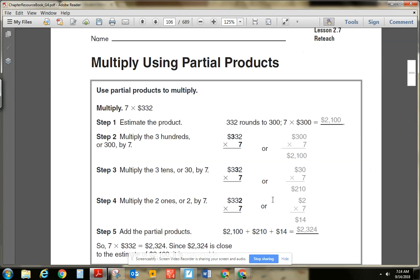So overall, we are multiplying using partial products. I do like this way. It's different than how I learned it. But it does make a lot of sense when I think about place value. Let me know if you have any questions. Bye.